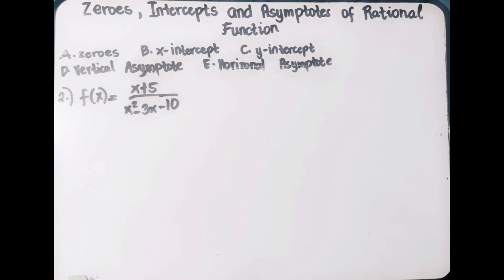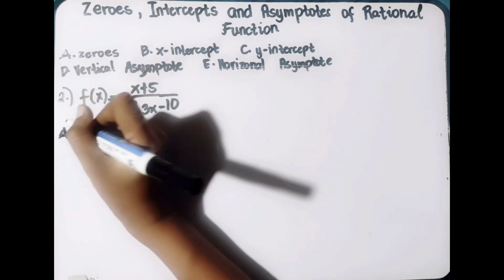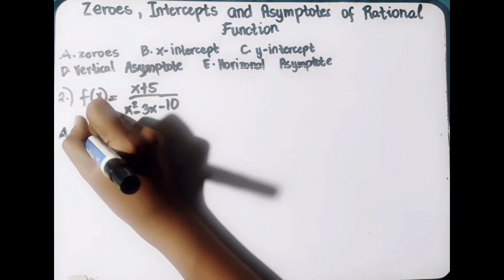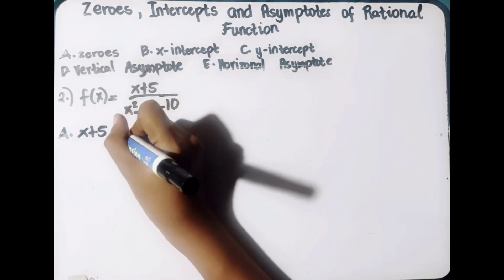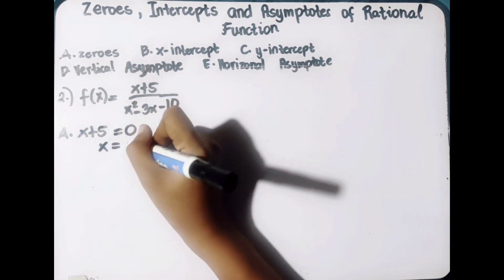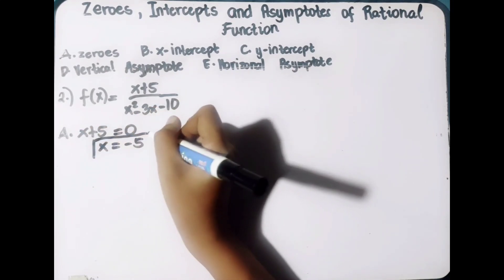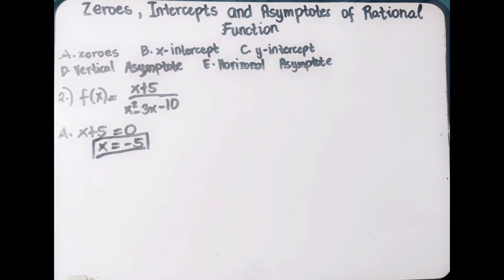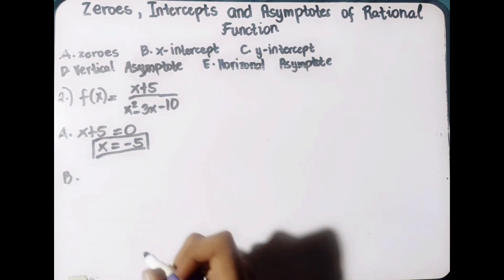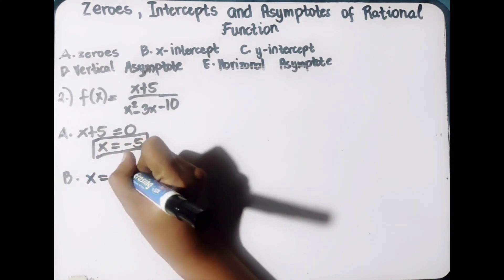Our second example is f of x equals x plus 5 over x squared minus 3x minus 10. First, let us identify the zeros by equating the numerator to zero. x plus 5 equals 0, so x equals negative 5. Therefore, negative 5 is the zero of the function. The x-intercept is also x equals negative 5.